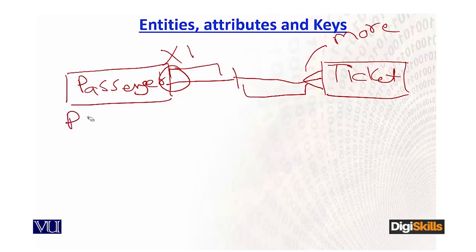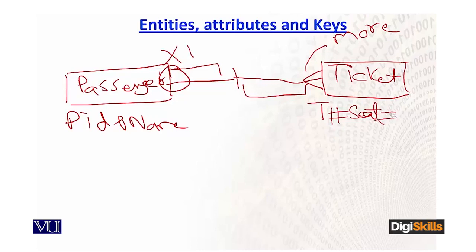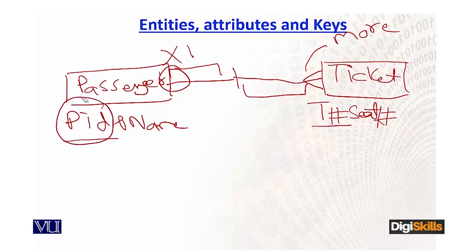Now I'll add two attributes. On the passenger side: passenger ID and passenger name. On the ticket side: ticket number and seat number. Because there is a one-to-many relationship between both, and PID is the primary key of the passenger table while ticket number is the primary key of the ticket table — in one-to-many, the rule says the primary key of the 'one' side table, i.e., PID, must be written in the ticket table as a foreign key.